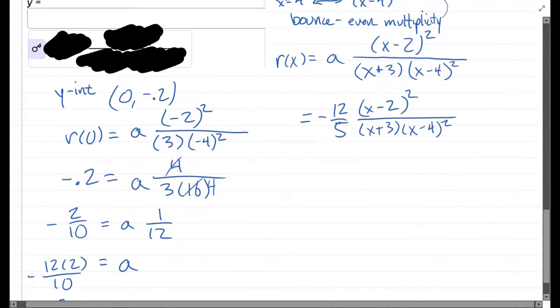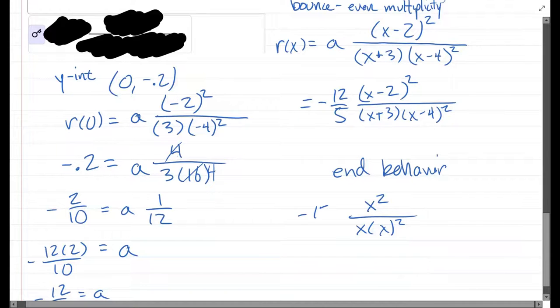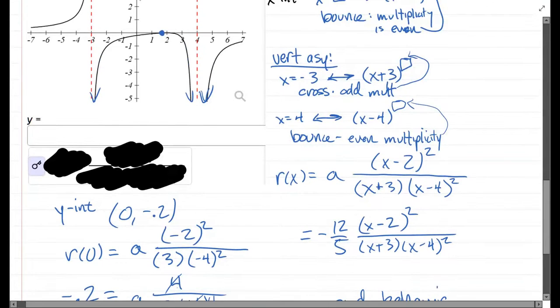You can check the end behavior. We have x squared on the top because the minus two doesn't matter. x times x squared on the denominator, negative twelve fifths. Because your denominator has more x's in it, you get flat end behavior, y equals zero. So that does correspond to the end behavior. If I drew it out more, it gets flat on both sides with y equals zero as your horizontal asymptote.